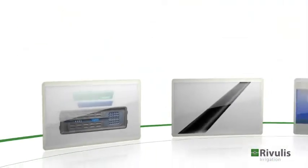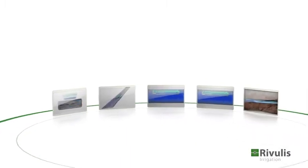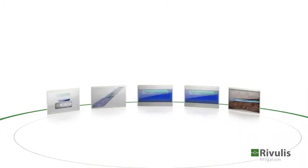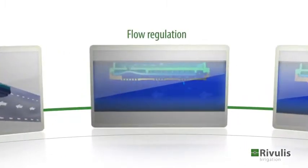Now let's examine a cross-section of the dripper and see how it regulates the water pressure to provide the flow rate you desire.